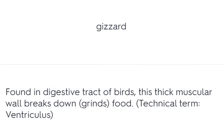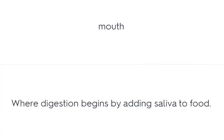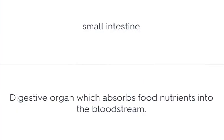Gizzard – found in the digestive tract of birds, this thick muscular wall breaks down food. Mouth – where digestion begins by adding saliva to food. Small intestine – the digestive organ which absorbs food nutrients into the bloodstream.